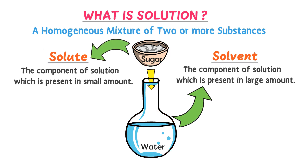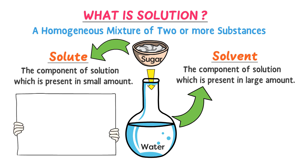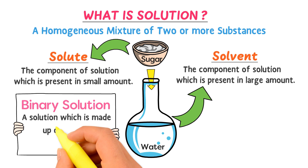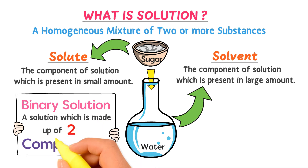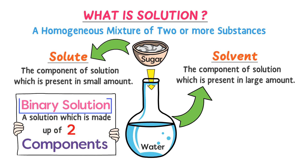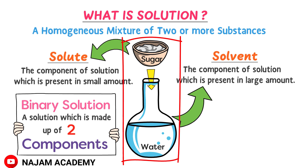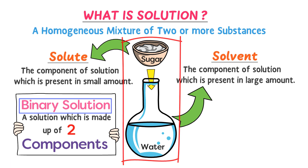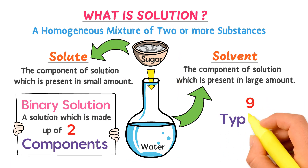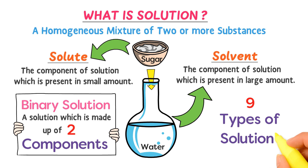We are going to learn about binary solutions in this lecture. A solution which is made up of two components is called a binary solution. For example, this solution is made of sugar and water, so it is also called a binary solution. Now, what are the 9 types of solutions?